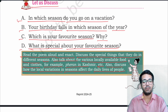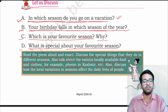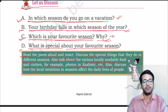The answer will be: A — Which season do you go on a vacation? That is in summer and winter season. B — Your birthday falls in which season? This will depend upon your birth date. C — Which is your favorite season? Your favorite season could be summer, winter, spring, or autumn — you have to write as per your choice. D — What is special about your favorite season? You have to write by your own.